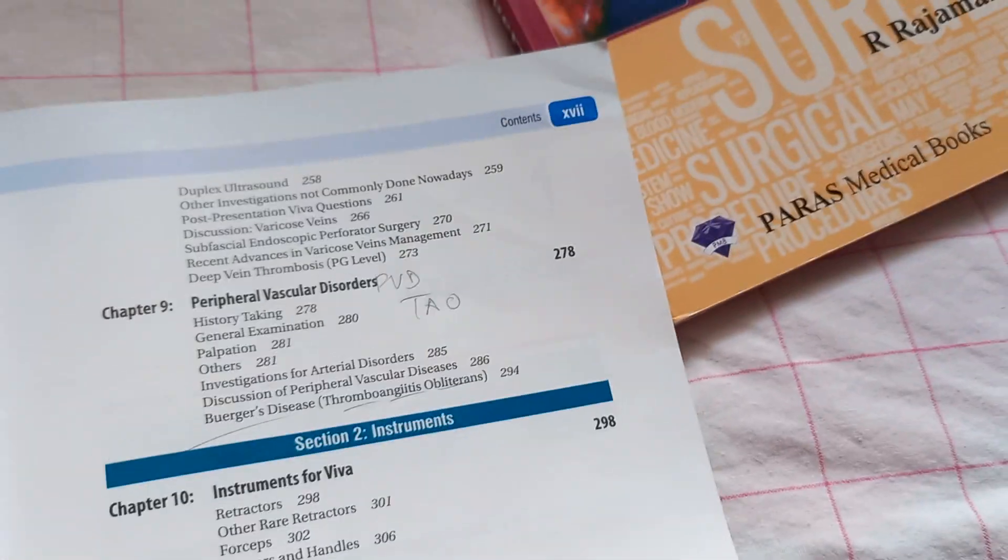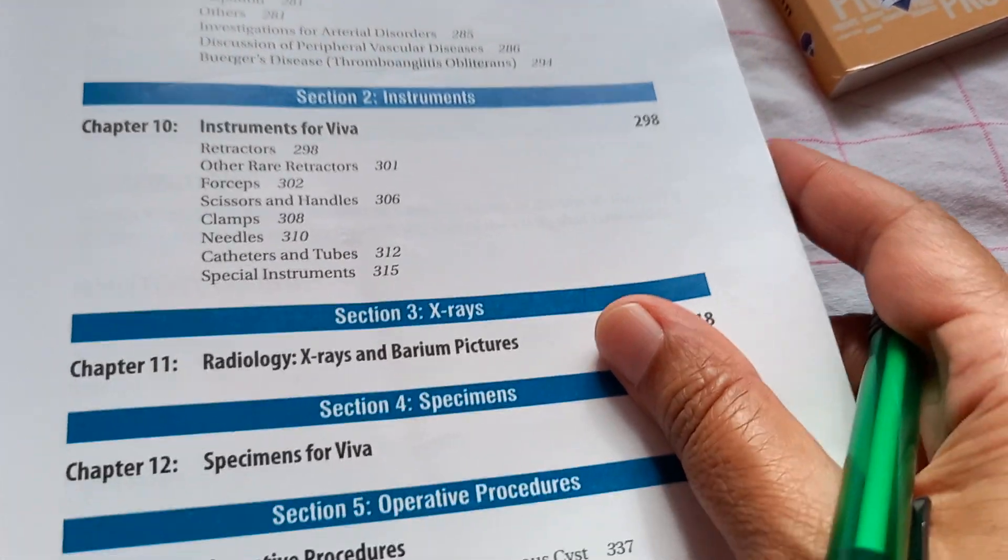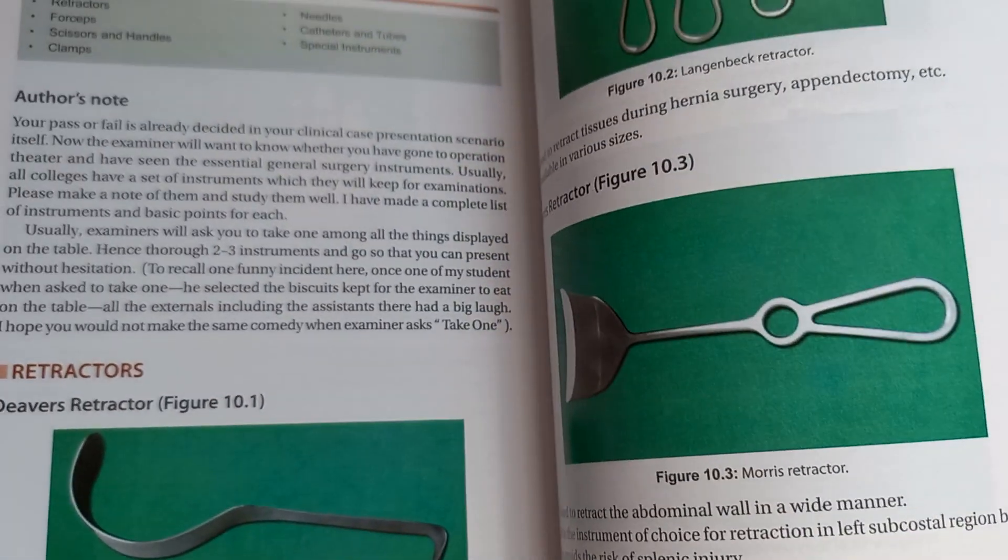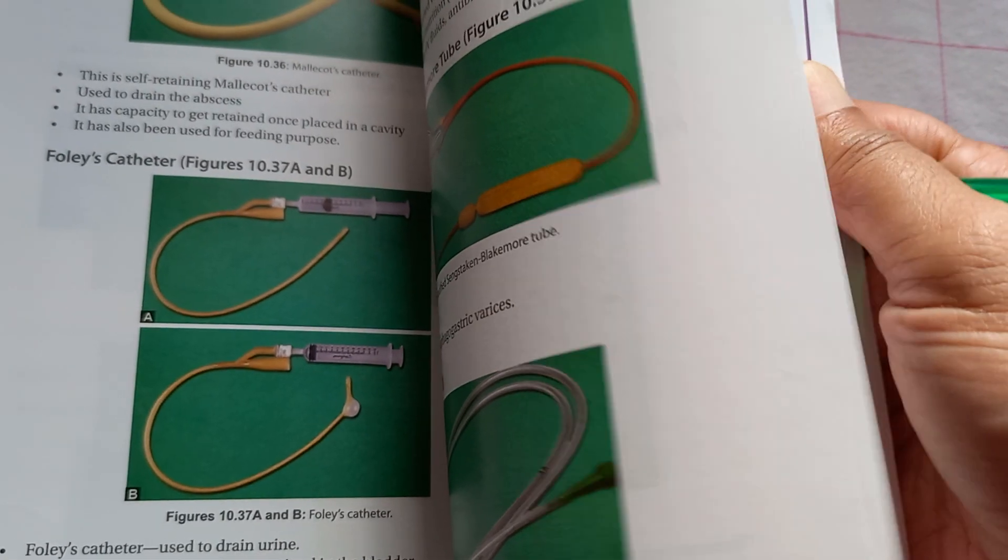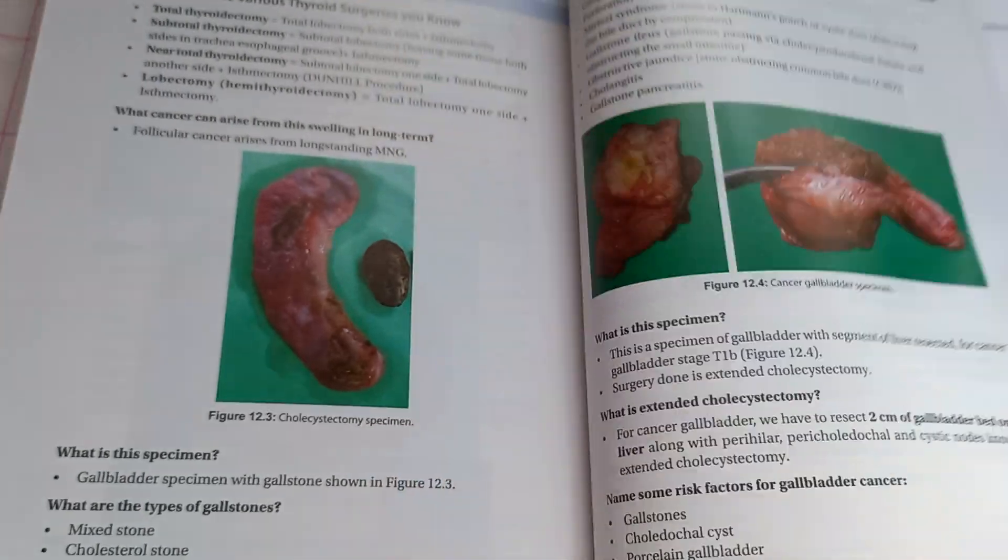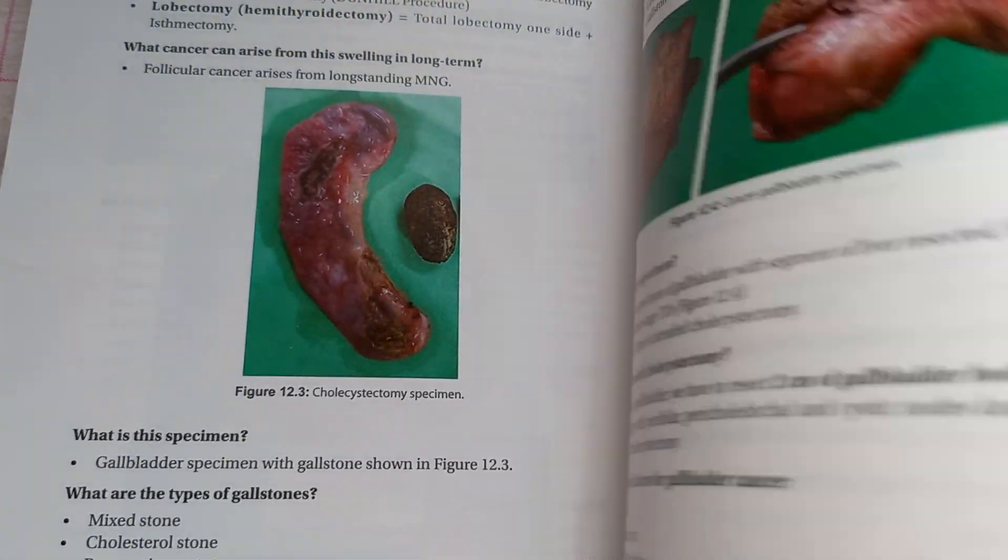Now, then let us go to other things in this book, other than long cases. You have instruments. Actually, they have given instruments also. This is the retractor, isn't it? Then you have x-rays. Instruments are there. Then, x-rays are there. Then, specimens are there. Lot of things are there in this book.